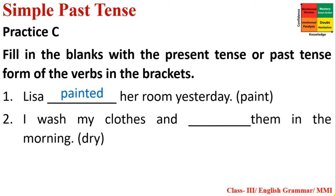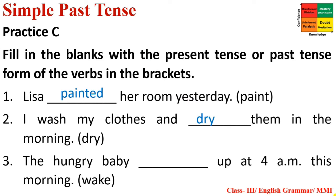Number three: 'The hungry baby woke up at 4 a.m. this morning.' 'This morning' means the work is already done, so Simple Past Tense is used. Past form of 'wake' is 'woke' (W-O-K-E).